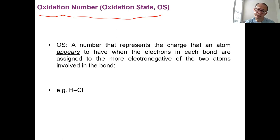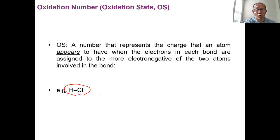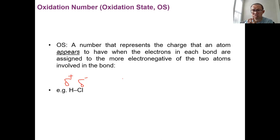Let's take a look at a very simple molecule — HCl — as an example to explain oxidation numbers. We know HCl is a covalent compound. It has a polar covalent bond, with chlorine being more electronegative and hydrogen being less electronegative. In this polar bond, we have a partial negative charge on chlorine and a partial positive charge on hydrogen, because the bond is polar and chlorine is more electronegative.